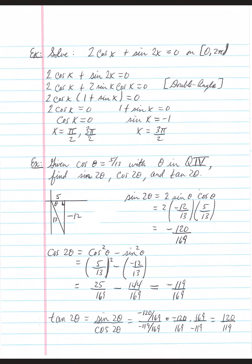For cosine(2θ), there are three expansions — I'll use cosine²(θ) − sine²(θ). Cosine(θ) = 5/13, so squared is 25/169. Sine(θ) = −12/13 from our diagram, so squared is 144/169.